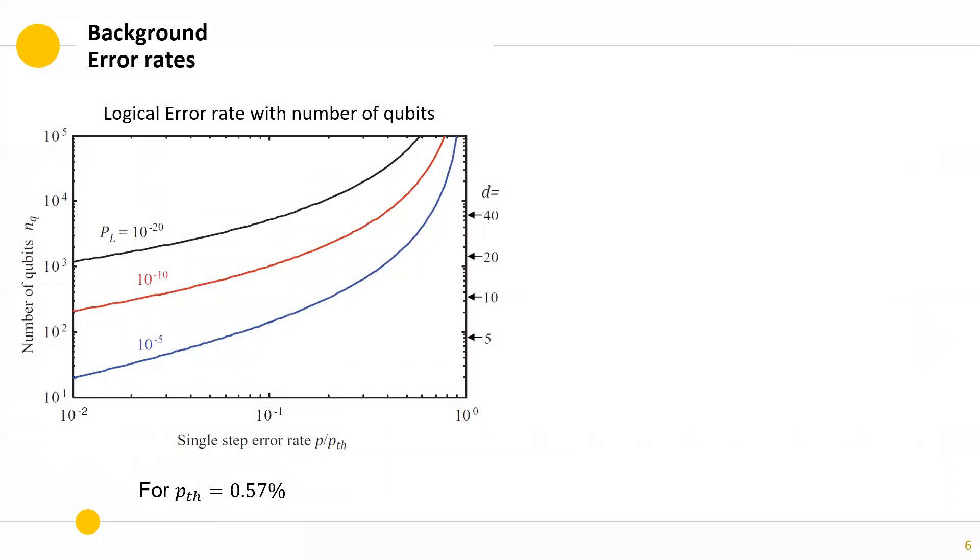Now that we have a definition for the logical error rate, we can see how it scales with the number of qubits. So, taking the threshold error rate to be 0.57%, we see that the logical error rate scales exponentially with the physical error rate. But we can also see that if we require modest logical error rate, then we can construct logical qubits with relatively few physical qubits.